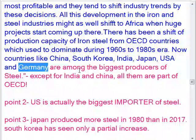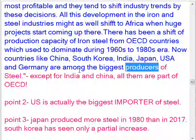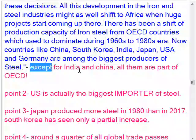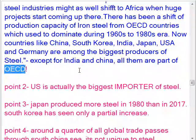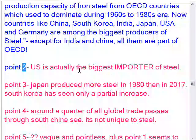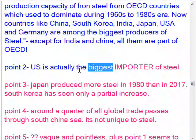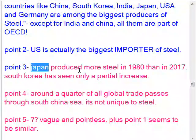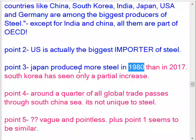Critique: Except for India and China, all the listed top producers are part of OECD. Also, the US is actually the biggest importer of steel. Japan produced more steel in 1980 than in 2017, and South Korea has seen only a partial increase.